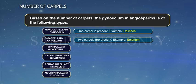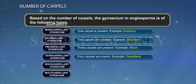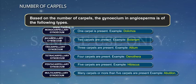Tricarpellary gynoecium: three carpels are present, example Allium. Tetracarpellary gynoecium: four carpels are present, example Oenothera. Pentacarpellary gynoecium: five carpels are present, example Hibiscus. Multicarpellary gynoecium: many carpels or more than five carpels are present, example Abutilon.